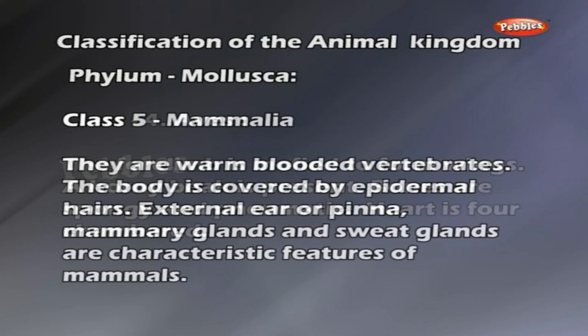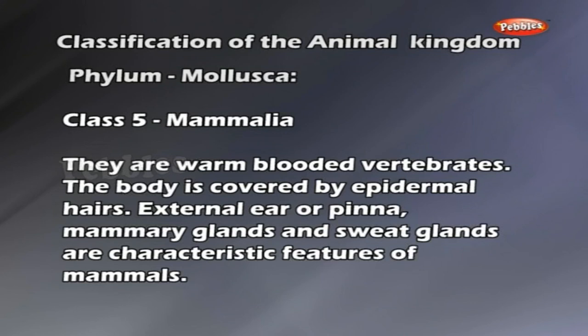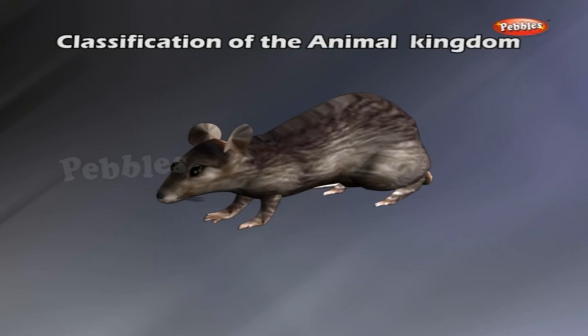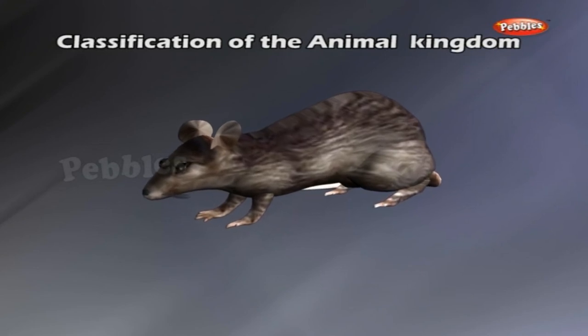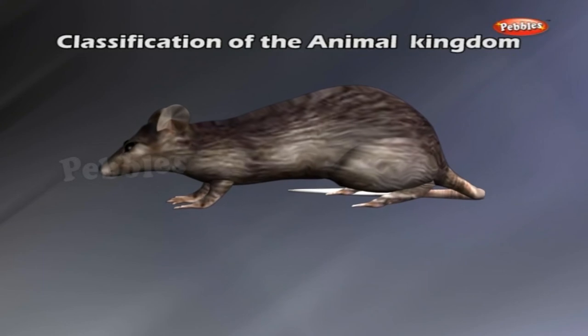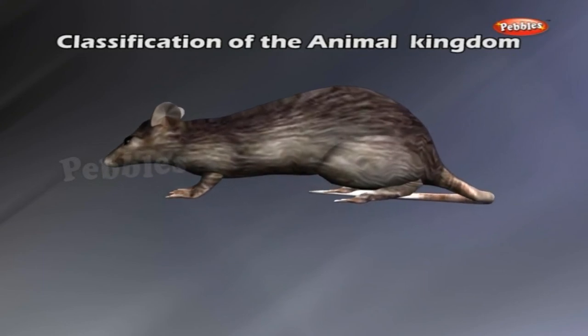Class 5: Mammalia. They are warm-blooded vertebrates. The body is covered by epidermal hairs. External ear or pinna, mammary glands and sweat glands are characteristic features of mammals. They are viviparous and females suckle their young ones. Examples: Rat, Kangaroo, Rattus.